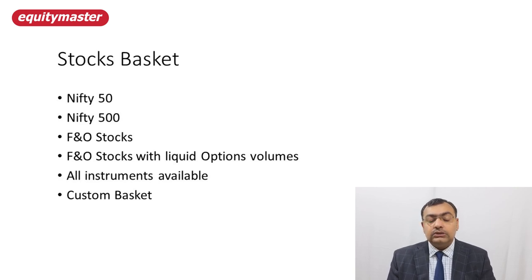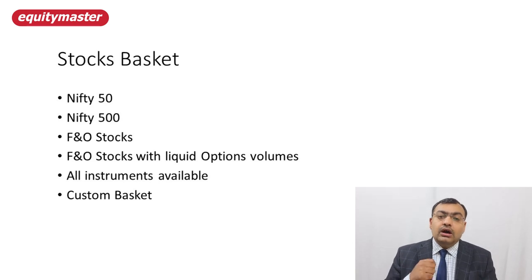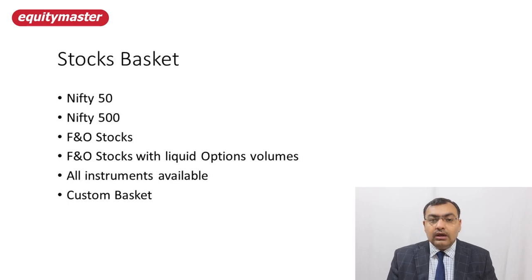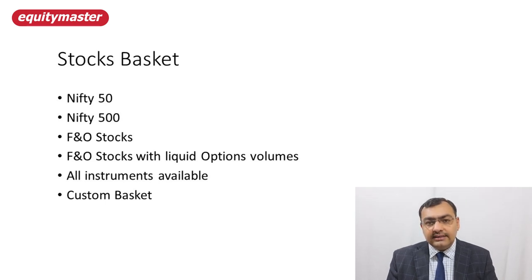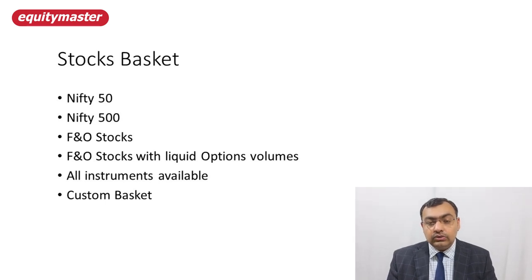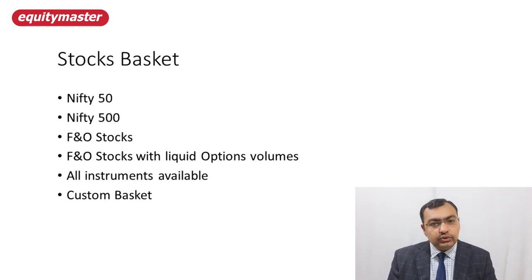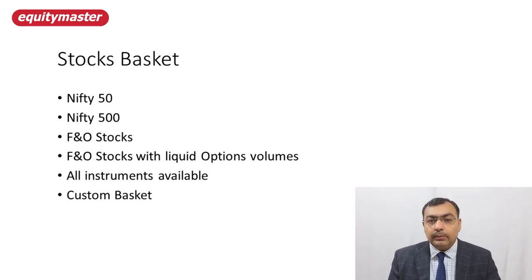Those who want to look at F&Os can look at F&O stocks — those who want to play in futures or options. They can further filter down from F&O stocks to those with liquid options volume. As of now, there are around 145 to 147 F&O stocks traded on NSE. If you filter down to options with liquid volume, you might end up with around 25 to 40 stocks, not more than that. So you have to choose based on options volume when drawing down to options strategies.